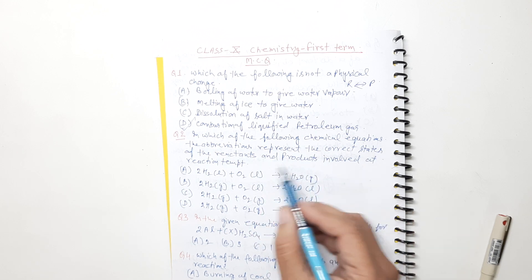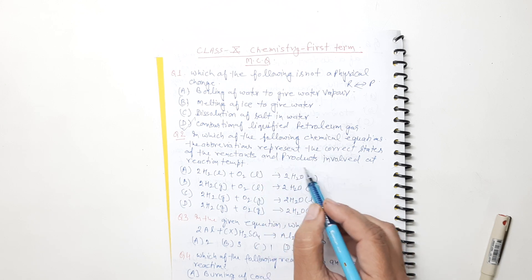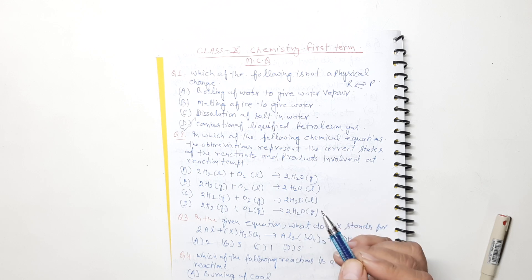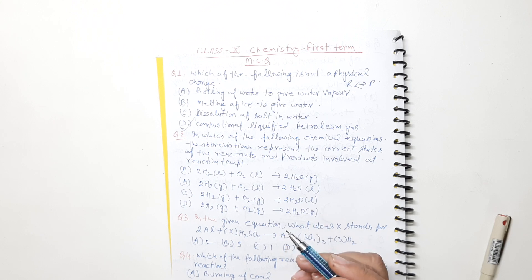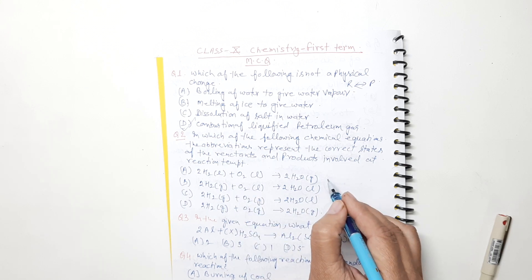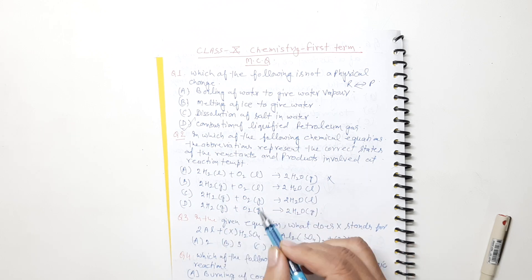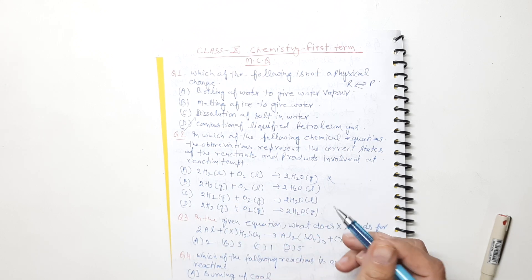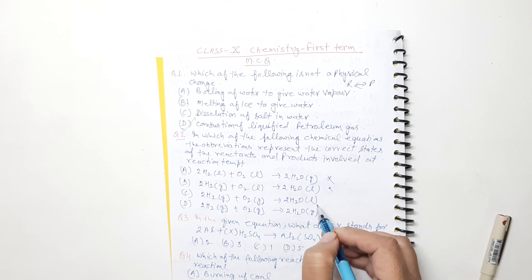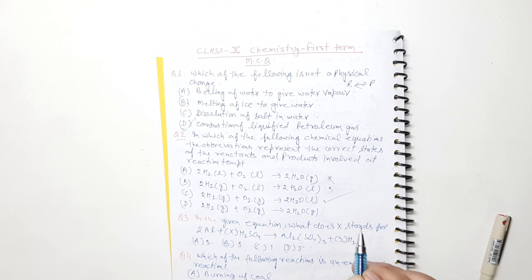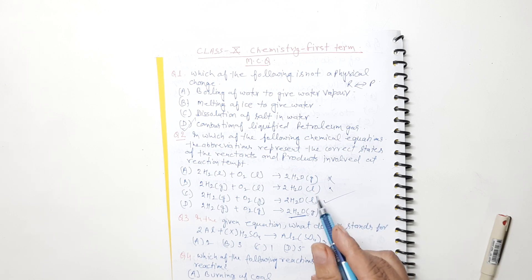The question asks: in which reaction do the abbreviations correctly represent the states of reactants and products? Let's check: hydrogen is not a liquid — so that option is incorrect. H2 is a gas; O2 (oxygen) is also a gas, not liquid — so that option is also wrong. Where hydrogen is gas, oxygen is gas, and H2O is liquid — that option is correct. The other option shows H2O as something else, which is not right. So that option is our correct answer.